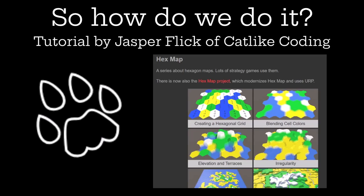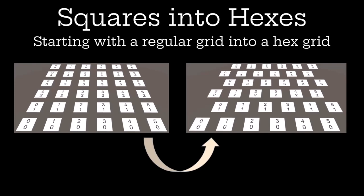I used this tutorial by Jasper Flick of Cat-like Coding, which is super extensive and incredibly detailed and explains why everything is happening. We can actually start with a square grid. These grids are basically just triangles that we create programmatically, and then we pop some numbers on them so we can see where they are. The cool thing is you can visualize where all the hexes are before you actually ever make hexes, and you can position them as if they were hexes using geometrical constants, like the ratio of the side length to the width of a hexagon.